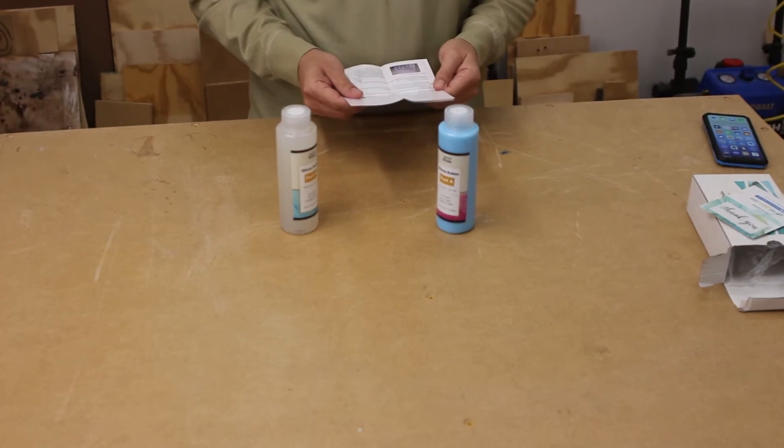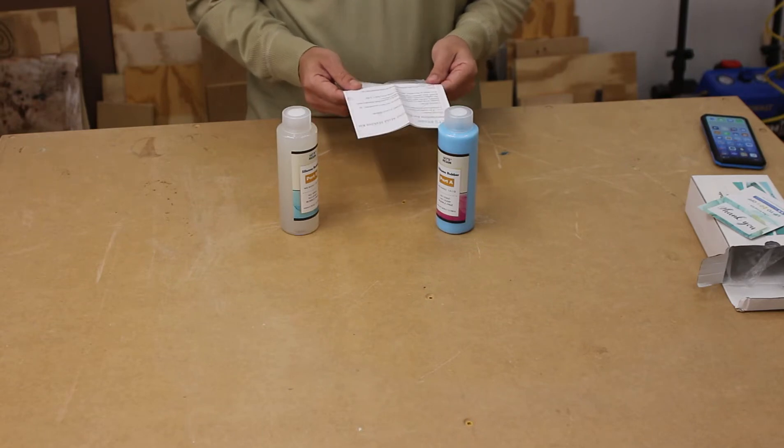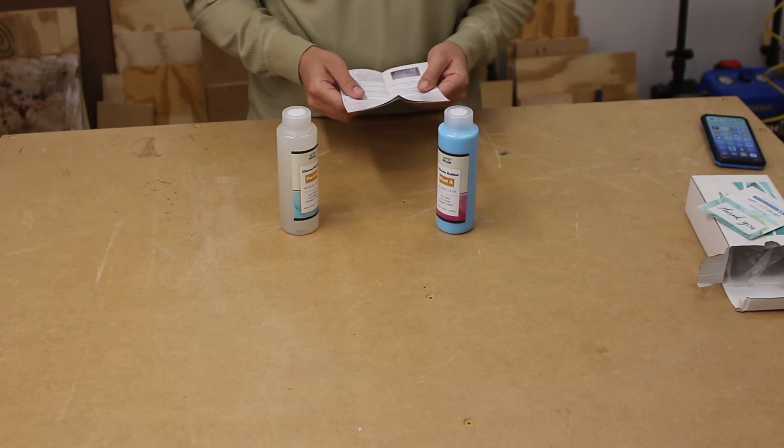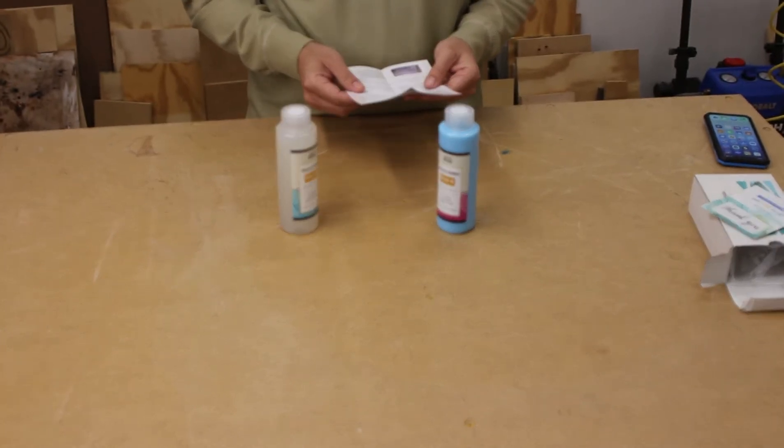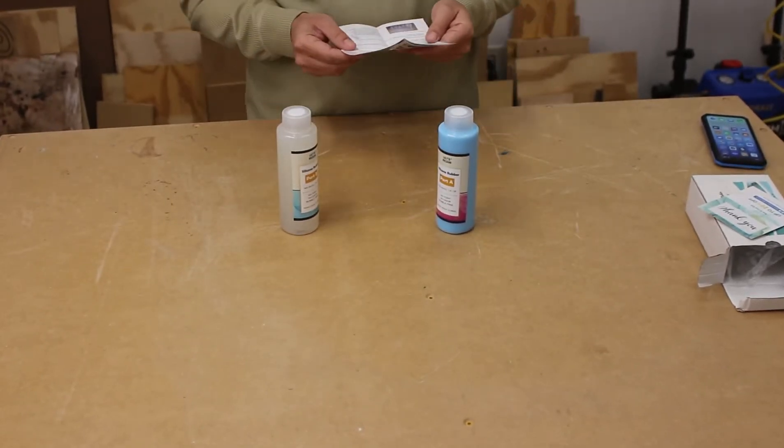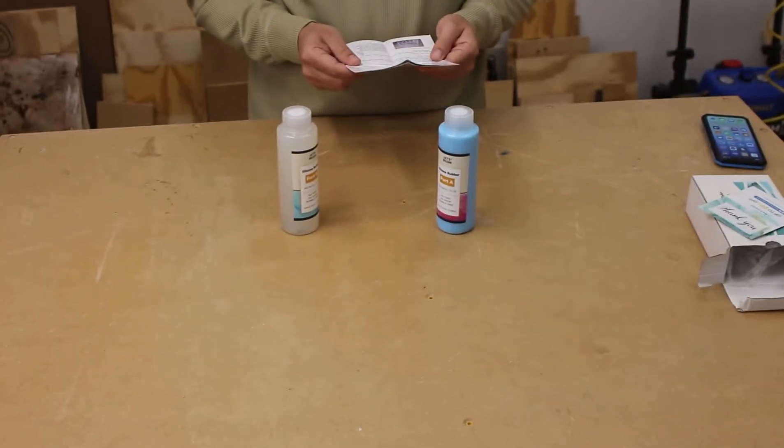Working time didn't really say, but it does say that it takes 24 to 48 hours to cure, which is a pretty long time considering the cure times I've seen on other folks' videos where they made silicone molds. But again, it was inexpensive, so maybe that's the trade-off.